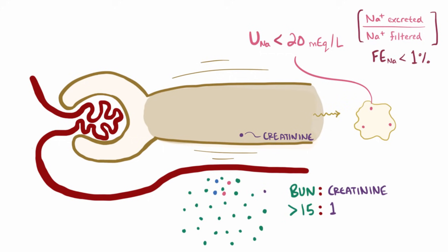And finally, since most of that water and fluid is being reabsorbed as well, the urine is typically pretty concentrated, usually greater than 500 mOmol per kg.